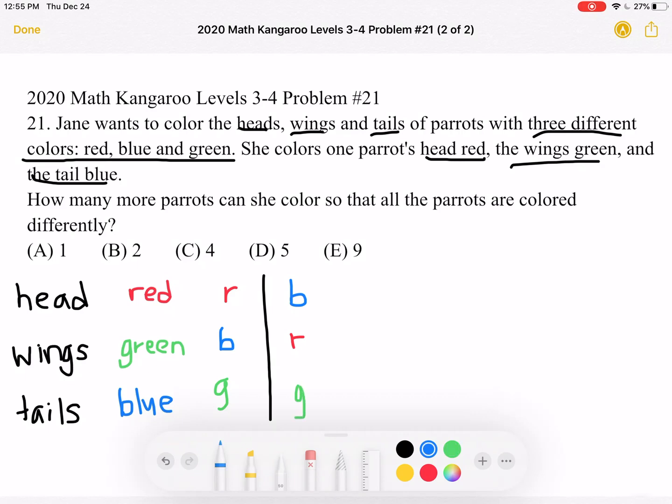And again we want to keep the blue head, and then we can do a green wing and a red tail. And that's it with blue. That's it with the blue head.